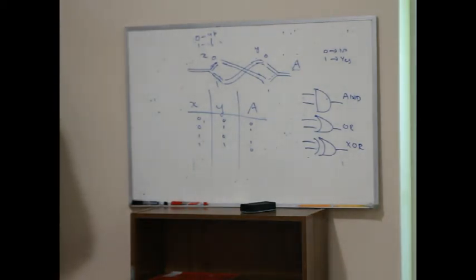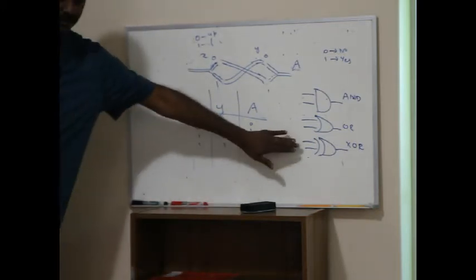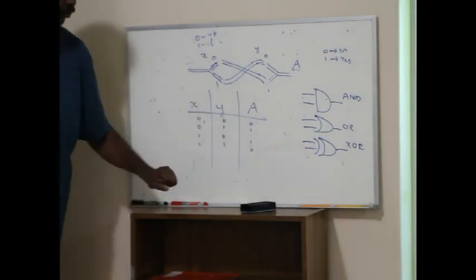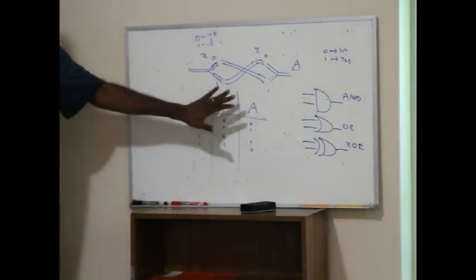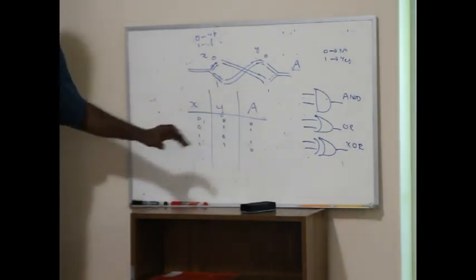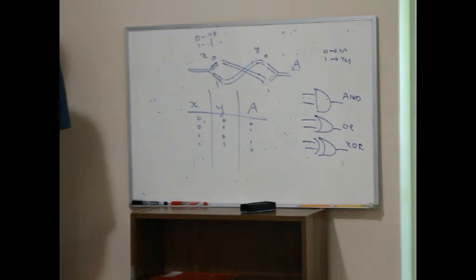So we have an AND gate, an OR gate, and this one is called an XOR gate. Now, once I'm done with this, I want you to write the truth table for all four gates.